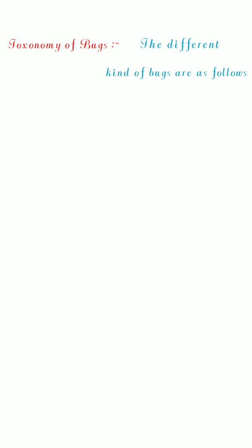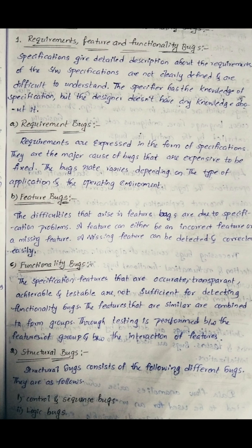Hi guys, welcome to our channel. Day before JN TV exams, the next topic is taxonomy of bugs. The different kinds of bugs are as follows: different types of bugs. The first one is requirements, feature, and functionality bugs.